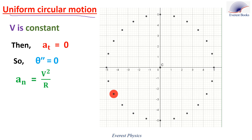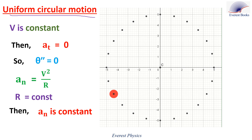We know that the normal acceleration is given by the speed squared over the radius of the circle. R is constant and V is constant, so the normal acceleration is constant. We can conclude that in uniform circular motion: the speed is constant, the tangential and angular accelerations equal zero, and the normal acceleration is constant.